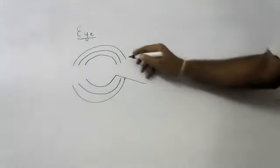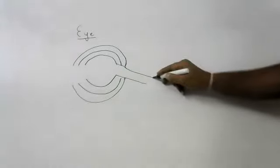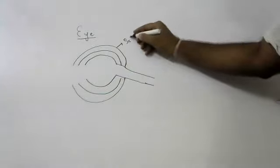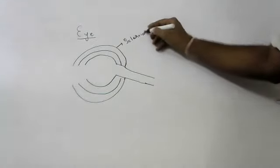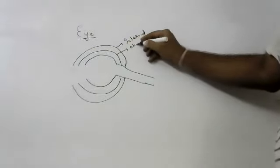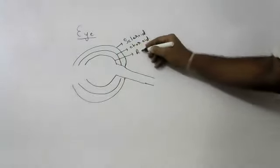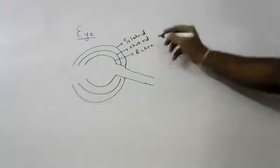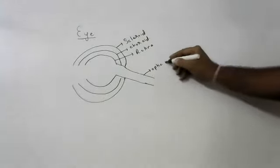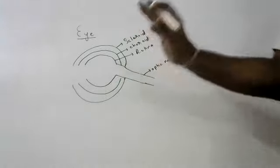At the back, the retina converges to form the optic nerve. The retina at the back converges to form the optic nerve, which goes to the brain. All the functions I will explain tomorrow; today we will learn how to draw the diagram.